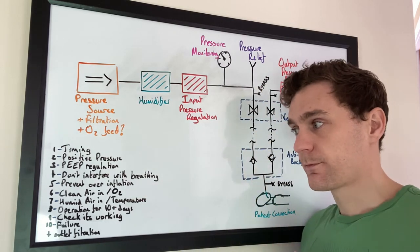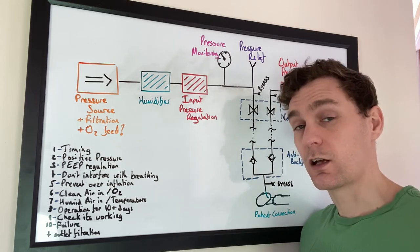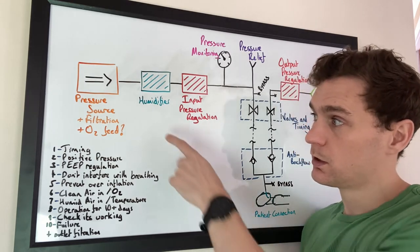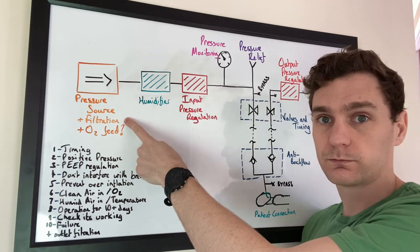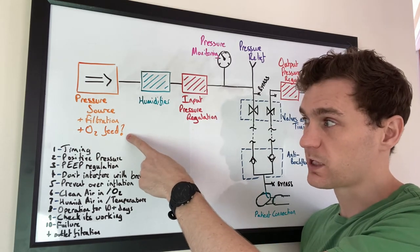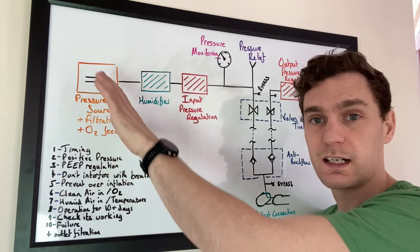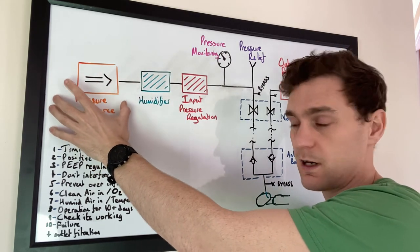Number six, clean air in and an oxygen feed. And we have here a bit of filtration and we have the potential for an oxygen feed. There's no detail here but that's what this module needs to cover.